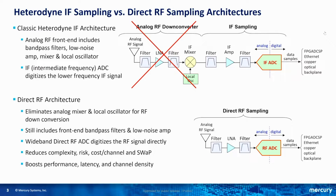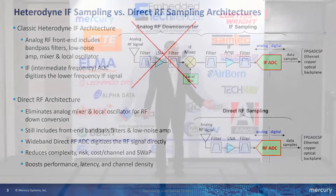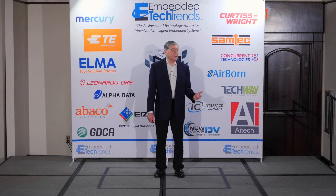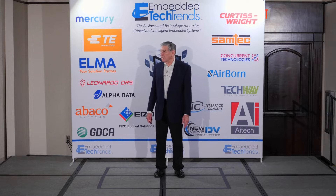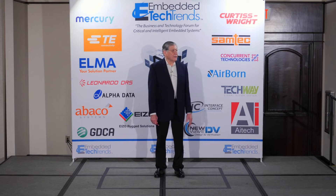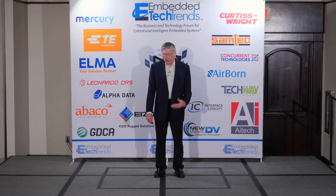What DirectRF gives you is a much simpler front end where you can capture signals directly at the RF signal frequency, eliminating all of the analog components — cost, size, weight, power, drifting, aging, phase noise, and so forth in a local oscillator — making the job of acquiring that signal much easier.